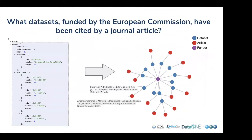In this example, we use a Crossref funder ID for the European Commission and query all the statistics where a dataset was linked by a funder ID but also was cited by a journal article. Every single hit for querying that endpoint will be a dataset that has been both funded and cited. EventData returns a JSON response, and we've formatted that in a way you can do something useful with it — in this case, visualized as a graph. It's worth noting this is early work, and the 14 citations shown are not all datasets funded by the European Commission, just those EventData has been able to collect so far.